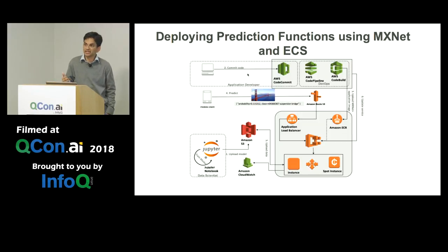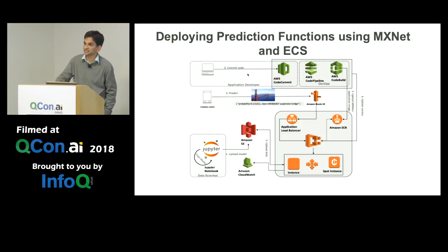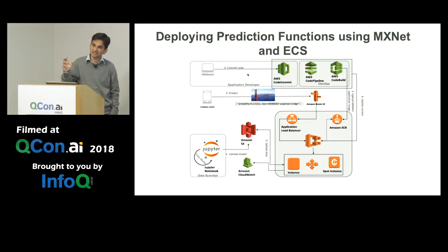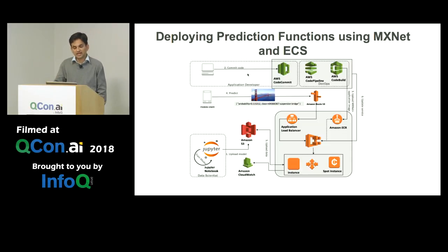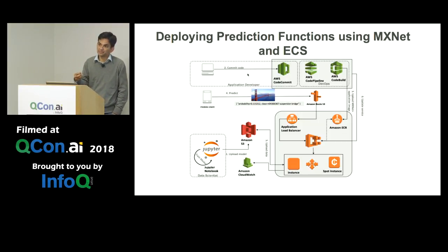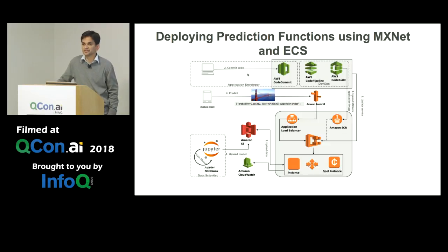We've achieved a communication model between different sets of people who most likely don't understand each other's language — using a common store, using the model as that mechanism to communicate. As a data scientist, you get the model, you store it in one place, and an app engineer wants to use the model to infer — call the MXNet API. We've also created a feedback loop where the data collected by the app is contributed back to the training data set. As your training data set improves, the efficacy of your model keeps improving.